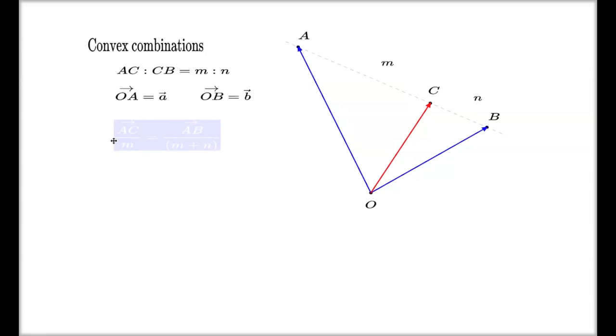AC vector and AB, they are connected by this scaling relation, right? I have to shrink my AC vector by m times and I have to shrink my AB vector by m plus n times, and that will be the single unit which fits m times in here and n times in here.